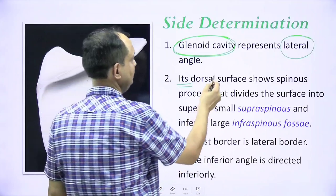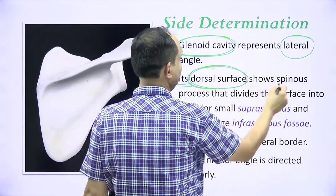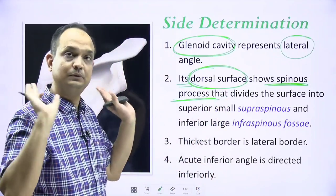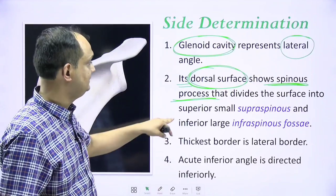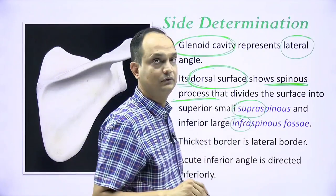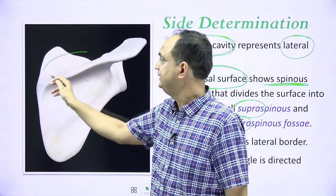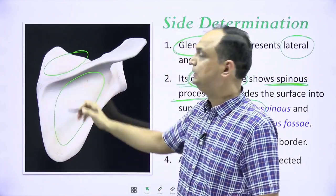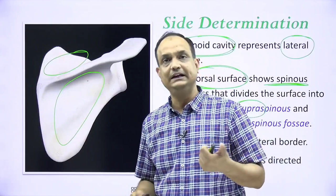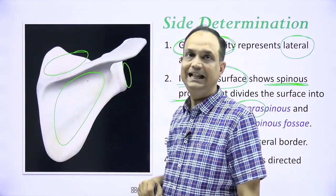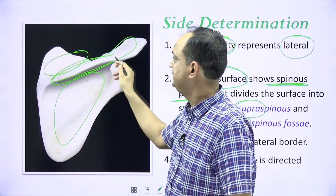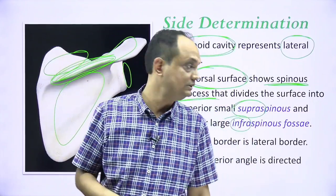So for side determination: first, the glenoid cavity faces laterally. Second, the dorsal surface is identified by the presence of the spinous process, which divides the whole dorsal surface into the supra-spinous fossa above and the infra-spinous fossa below. So when you are doing side determination, keep the glenoid cavity laterally and identify the dorsal surface by the spinous process.